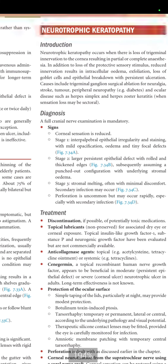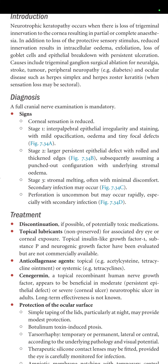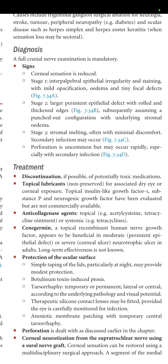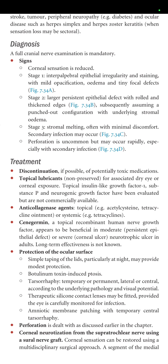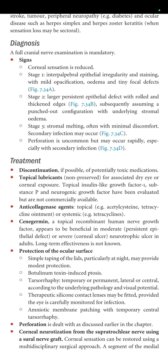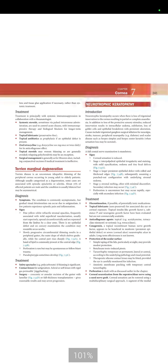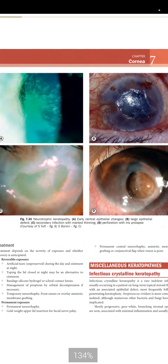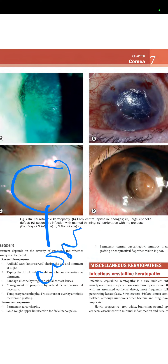Stage three is stromal melting, often with minimal discomfort. Secondary infection may occur. Perforation is uncommon but may occur rapidly, especially with secondary infection. Figures 7.34c and 7.34d show secondary infection with the cornea about to melt, and in d, there is a perforation with iris prolapse.